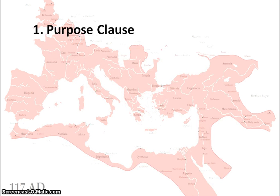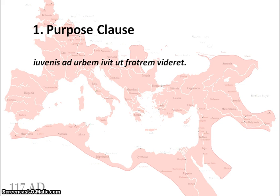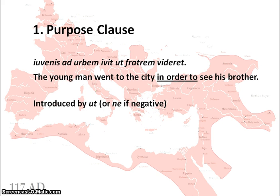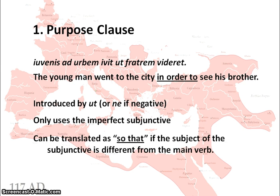The first use is purpose clauses. A purpose clause explains the purpose of an action, or why someone did something. For example: 'iuvenis ad urbem iit ut fratrem vidaret' — the young man went to the city in order to see his brother. A purpose clause is introduced by 'ut', or 'ne' if negative. It only ever uses the imperfect subjunctive, and can be translated as 'so that' rather than 'in order to' if the subject of the subjunctive differs from the main verb — for example, 'the man bought some food so that his slave might eat.'